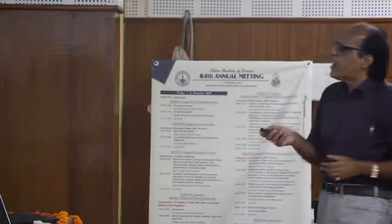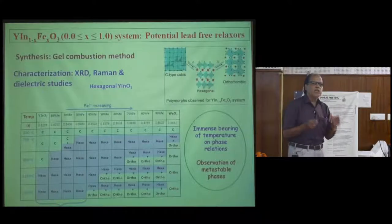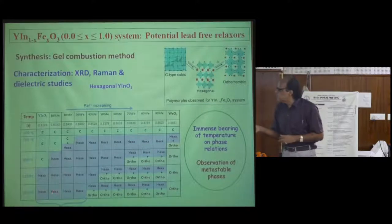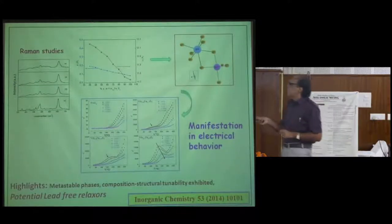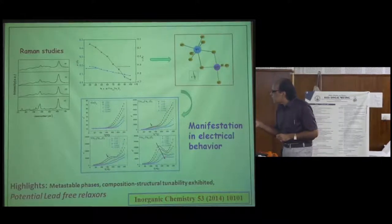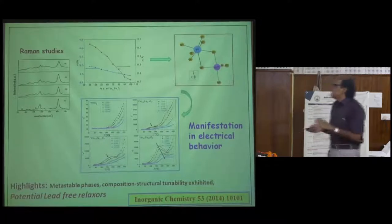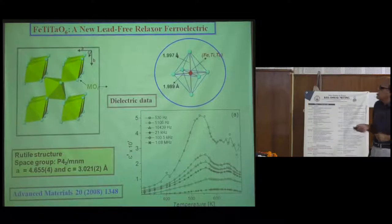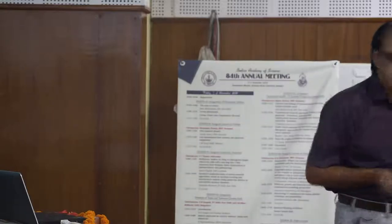Likewise, we made another series YIn(1-x)FexO3. Again, nothing is common in these two end-members. In this kind of series it is difficult to get more than one or two single-phase compounds because you are working against conventional solid state chemistry concepts. We got only three single-phase compositions. These show a remarkable trend: pure YInO3 shows nothing unusual; at 10% iron something emerges; at 20% iron more emerges; and at 30% iron it shows beautiful frequency dispersion — meaning this compound is also an excellent lead-free relaxor material. We also made FeTiTaO6, which turned out to be an excellent lead-free material — in fact slightly better than PMN and PZN.